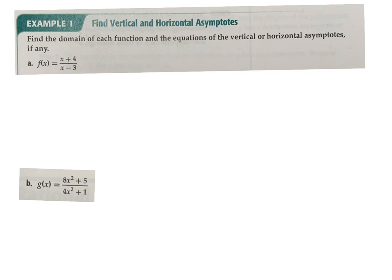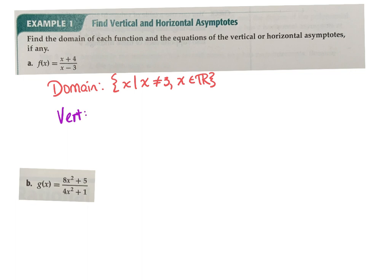Find the domain of each function and the equations of any vertical and horizontal asymptotes. For domain, we ask: can x be anything with no restrictions? If I want x to equal 3, there's a problem — my domain is x such that x does not equal 3. Domain will often help you find your asymptotes, because in this case that 3 is non-removable, meaning I cannot cancel it with anything in the numerator. So that automatically gives me my vertical asymptote at x equals 3.